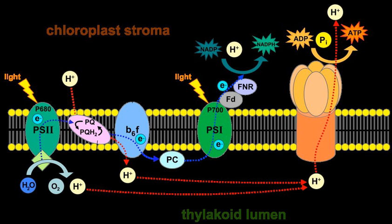In bacteria, the special pair is called P760, P840, P870, or P960. 'P' here means pigment, and the number following it is the wavelength of light absorbed.